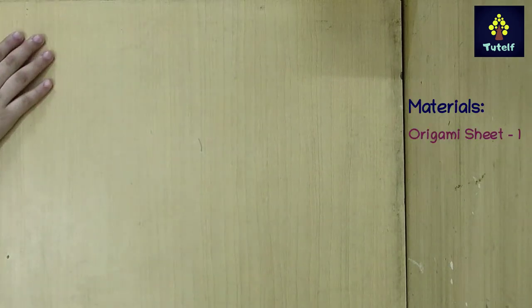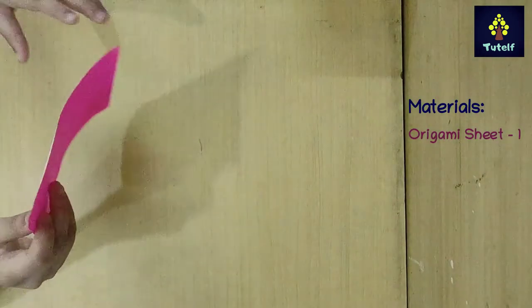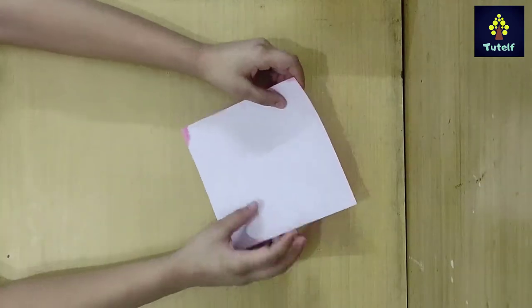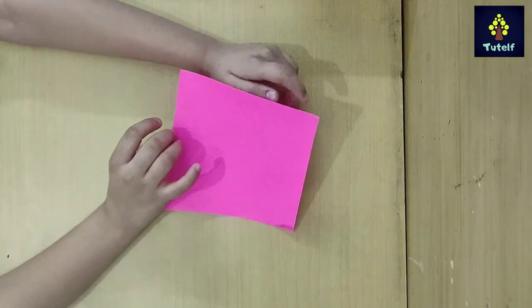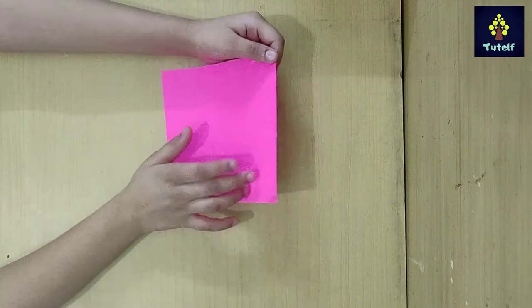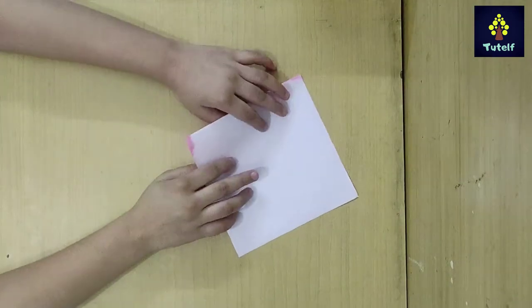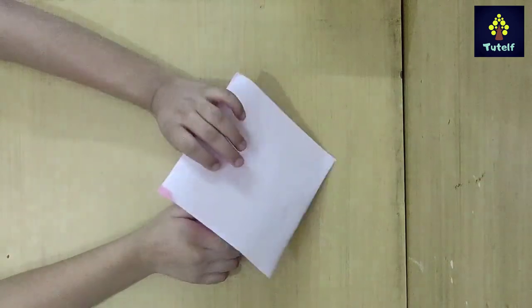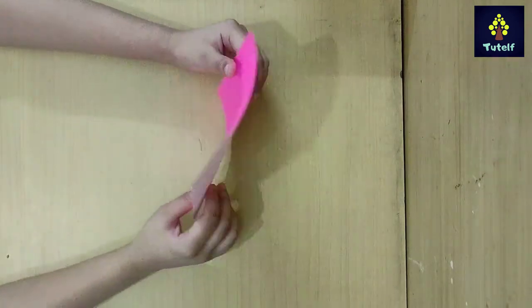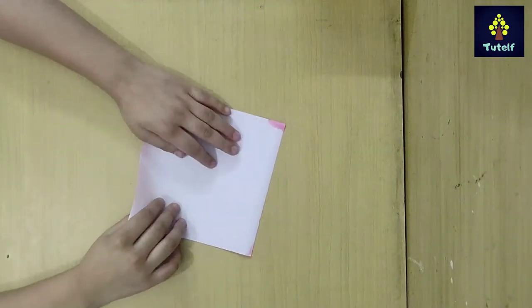You need just an origami paper. If your origami sheet is double sided, then it will be very good for you. But if your origami sheet is like mine, then I will place the white part facing down.